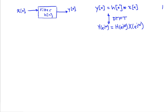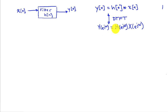Here we've illustrated the convolution-multiplication property for the discrete time Fourier transform. If we have an input x of n through some filter h of n, we get an output y of n. The output y of n is the convolution of the impulse response with the input. Taking the discrete time Fourier transform, this filtering action is given by the product of the DTFT of the impulse response and the DTFT of the input.